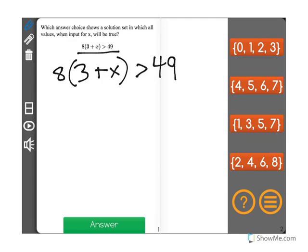And basically what the question is asking is, which of these solution sets over here, our answer choices, shows a set where all four numbers will be true if input for x? So let's go ahead and solve this out first.